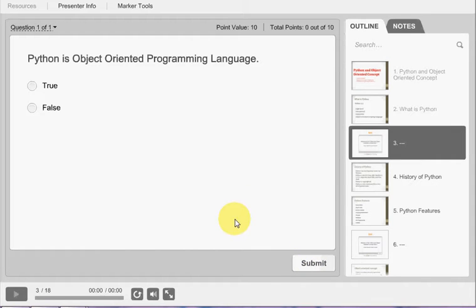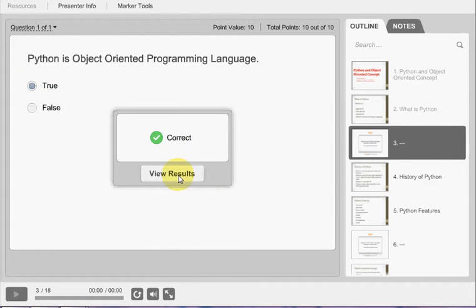It's time for activity. Our question is that Python is object-oriented programming language. Answer is true. We submit our question. Answer is correct.